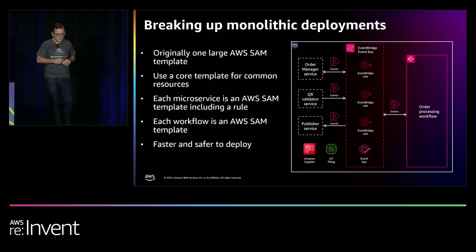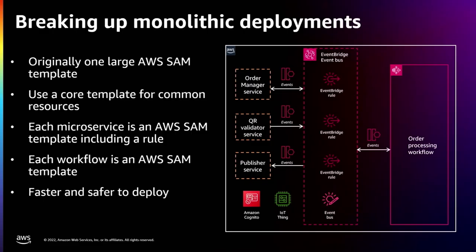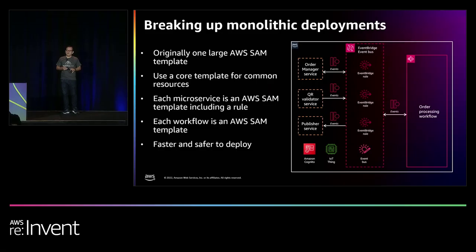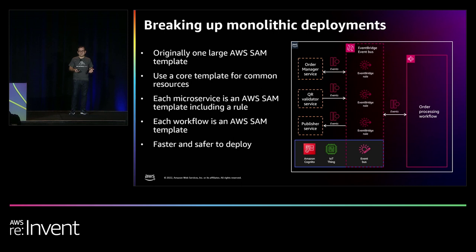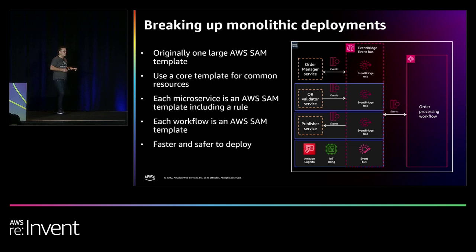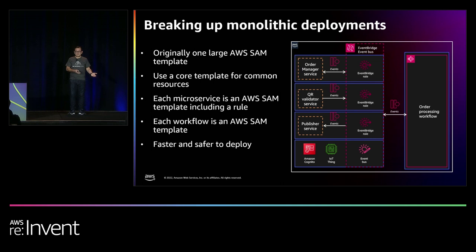Here's another lesson: breaking up monolithic deployments. In our early phases, we had one gigantic SAM template with absolutely everything in it. When we had to change Cognito from email to SMS, it required taking down the whole stack and redeploying from scratch. So instead we built a SAM template for shared resources like Cognito, the IoT thing, and the event bus — things that largely aren't going to change but are used by everything. Each microservice became its own SAM template with a rule listening to events off the bus. This made it much faster and safer to deploy changes.